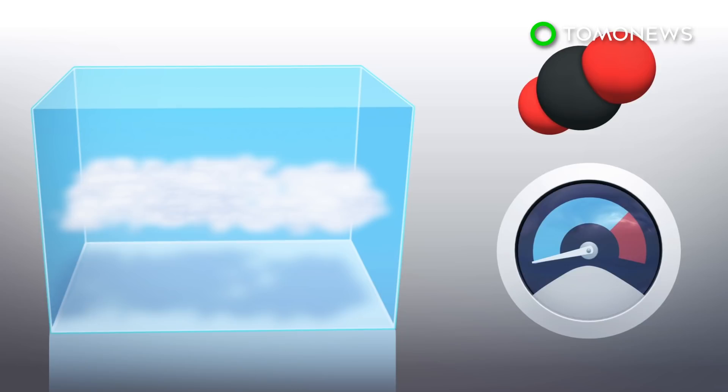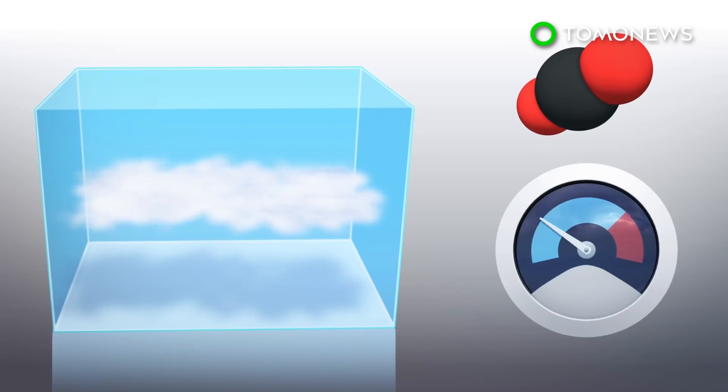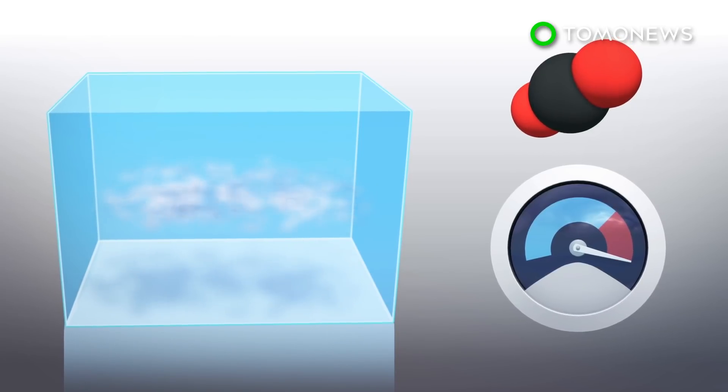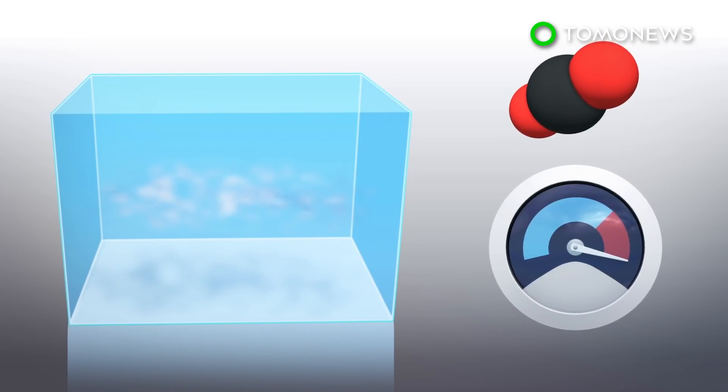Scientists modeled a small patch of sky using a supercomputer to run simulations and found that if carbon dioxide levels reach about 1,200 parts per million, or ppm, in the atmosphere, stratocumulus clouds break up.